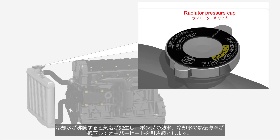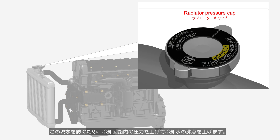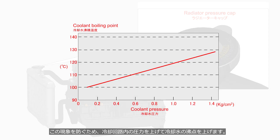When the coolant boils, bubbles are generated, leading to a decrease in pump efficiency and the thermal conductivity of the coolant, resulting in overheating. To prevent this phenomenon, the system increases the pressure within the circuit to raise the boiling point of the coolant.